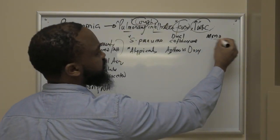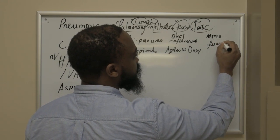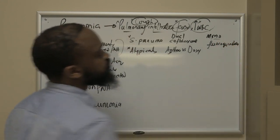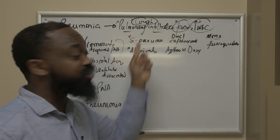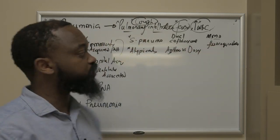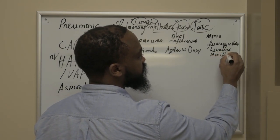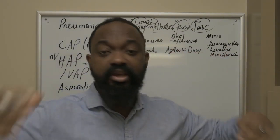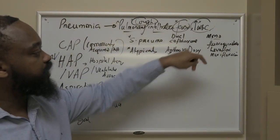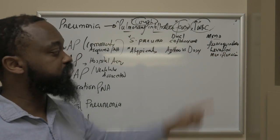For monotherapy, you want something that covers both Strep pneumo and atypicals simultaneously — your choice here would be the fluoroquinolones. A good trick question: all fluoroquinolones cover Strep pneumo except which one? The answer is ciprofloxacin — ciprofloxacin does not cover Strep pneumo. So for Strep pneumo coverage with fluoroquinolones, it will be levofloxacin or moxifloxacin, with levofloxacin being the most commonly used. So: dual therapy is ceftriaxone plus azithromycin or doxycycline; monotherapy is levofloxacin or moxifloxacin.